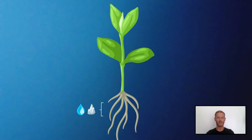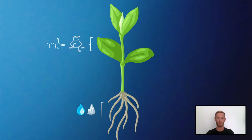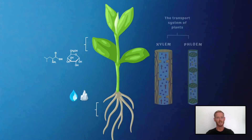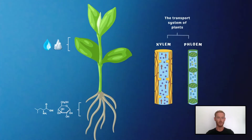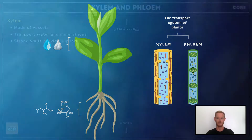Photosynthetic plants take up water and minerals from the soil, and produce sugars and amino acids in the leaves. These products are then delivered to the parts of the plant that don't photosynthesise, like the fruits, buds and roots. All of this relies on the movement of substances from one part of the plant to another, and this takes place in xylem and phloem vessels.